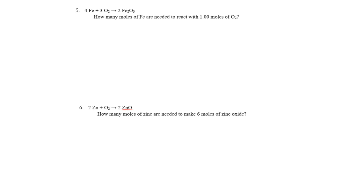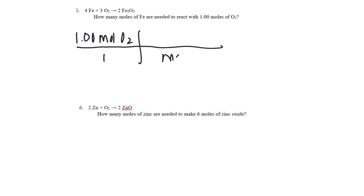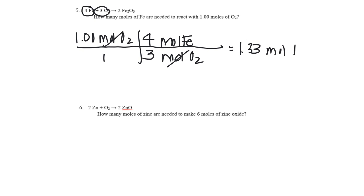Question five: we're starting with oxygen — how many moles of iron are needed to react with one mole of oxygen? Start with one mole of oxygen over one. Moles of oxygen comes down; I want to get to moles of iron. In the equation, there's a four next to iron and a three next to O2. Cancel units and do the math — I get 1.33 moles of Fe.